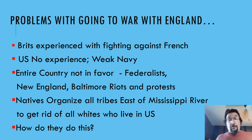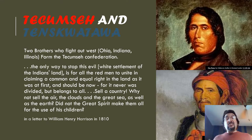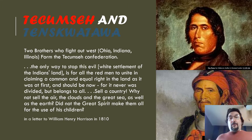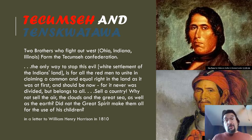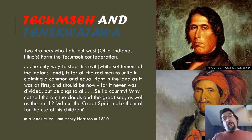The natives actually get all together, organize themselves, and come up with their own new confederacy. They organize all the tribes east of the Mississippi River to get rid of all the whites who live in the United States, and they do this through the help of two brothers — Tecumseh and Tenskwatawa. They form the Tecumseh Confederation. The prophet has visions of all the whites leaving and the Native Americans taking over.